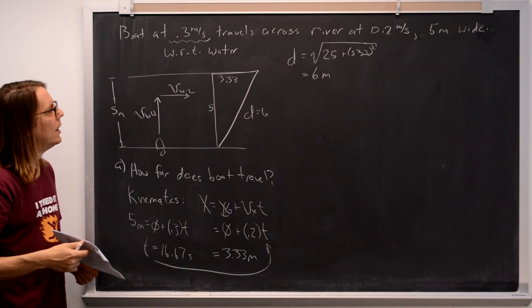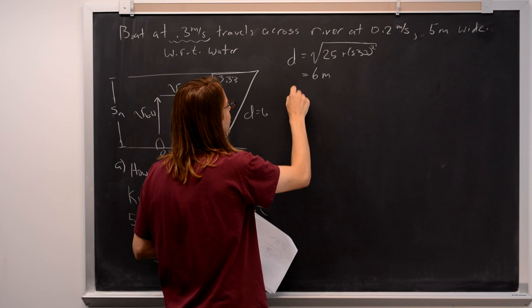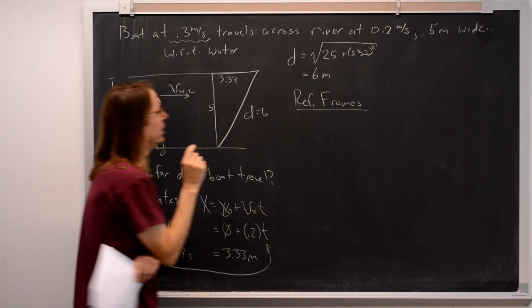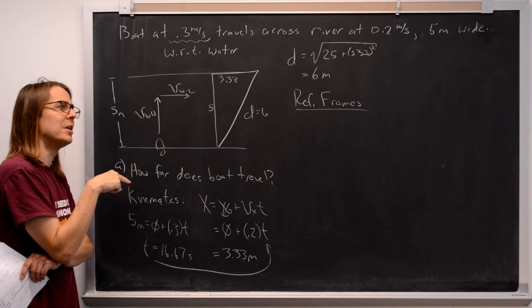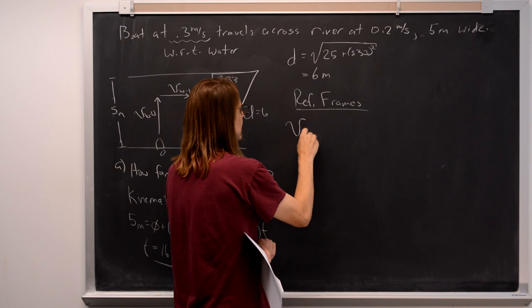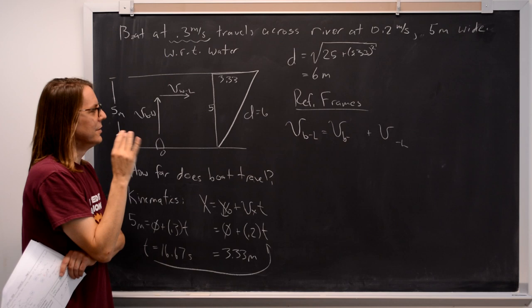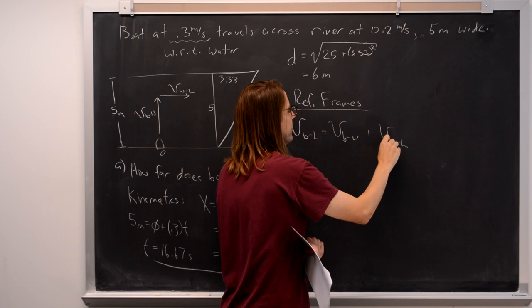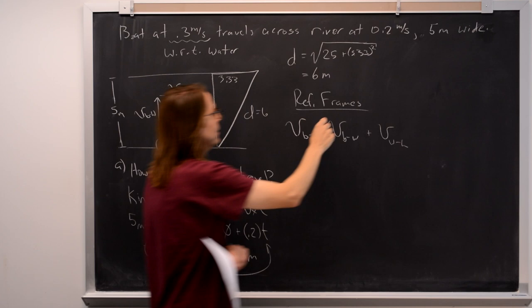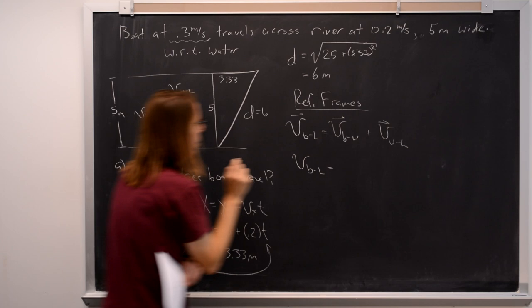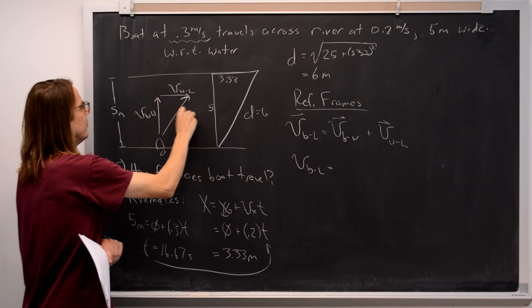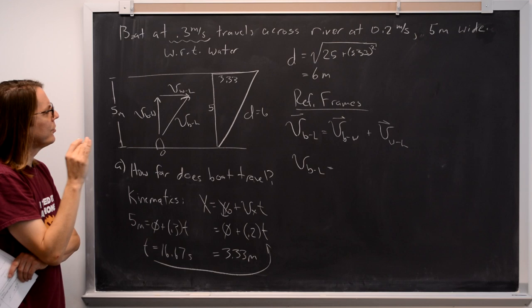There's a second way to get this one. You could do straight kinematics, or you could do it a little bit more with reference frames. You could say, I remember that if I want to know how fast the boat is going in the land frame, the velocity of the boat in the land is the velocity of the boat in the water plus the velocity of the water in the land. Those are the two you were given. So what you could do is just vector sum them, and here's the velocity of the boat in the land frame.